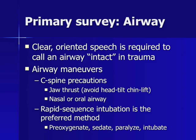A nasal or oral airway may be used to optimize bag mask ventilation. Rapid sequence intubation is the preferred method to gain control of an unintact airway. RSI involves pre-oxygenation, sedation, paralysis, followed by intubation.